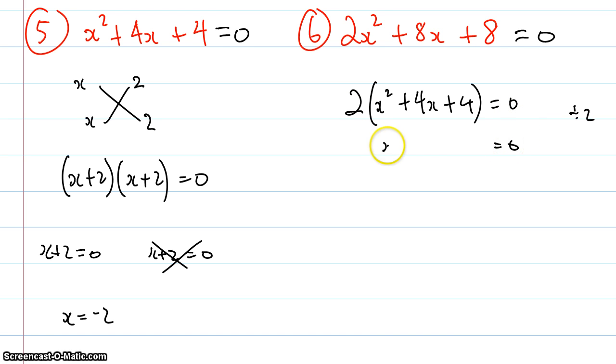So the great thing is any time you have a number out the front of a bracket like this and it's multiplied by everything, you can just get rid of it or divide it by 2 and it vanishes. Once it's vanished this bit here looks exactly the same as this bit up here, so therefore the answers will be exactly the same so x equals negative 2 for this case.